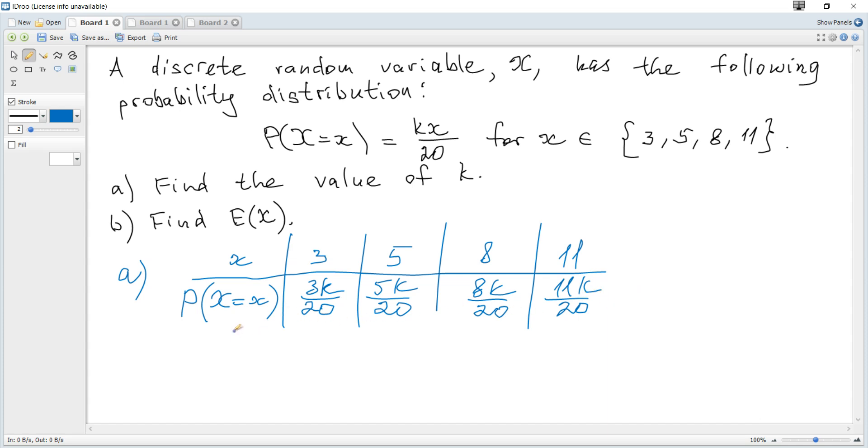You can see that we can factor out k over 20. So it becomes k over 20 times (3 plus 5 plus 8 plus 11), which is 27. So it's 27k over 20 equals 1. Hence, k is 20 over 27.